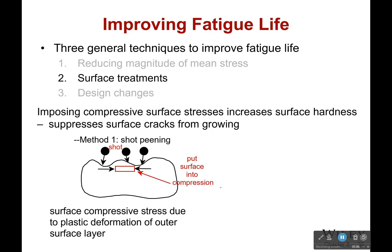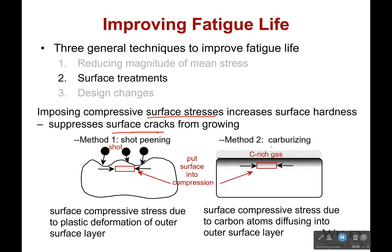The second method is surface treatments. Compressive surface stresses make the surface harder and suppress surface cracks from growing. One way is shot peening — you literally shoot the surface with a bunch of little particles, causing small plastic deformation that makes it harder for cracks to grow. Another is carburizing — putting the material in a carbon-rich gas so carbon molecules diffuse into the surface, making it harder and more resistant to crack formation.